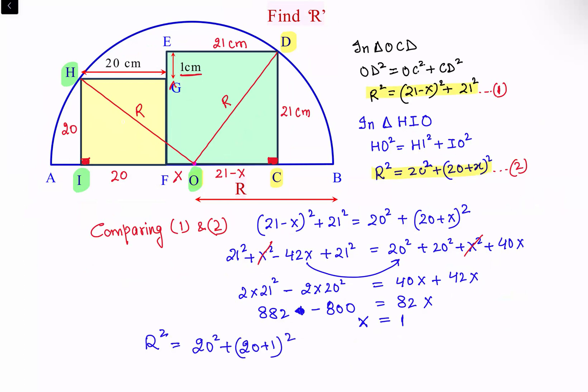So we are getting R square is 20 square plus 20 plus one square, so this is R square is 400 plus 441, that's 841, and R which is radius of the circle, that's equals to 29 centimeters. And that's our answer. I hope you enjoyed the solution. I'll see you in next video, till then tata bye bye.